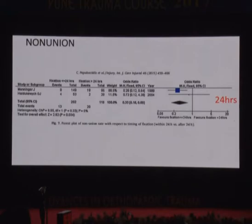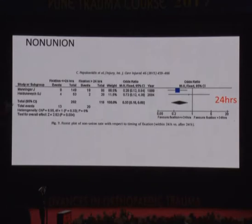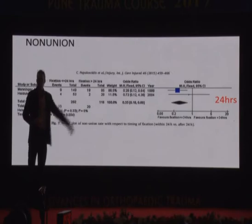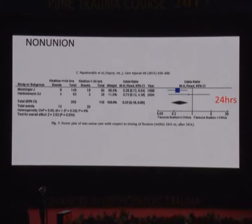What about non-union? It looks like there are two trials — Hadikovic and the manager's study — looking at less than 24 hours or over 24 hours, suggesting that non-union rates may go up if we don't get to them before 24 hours. So AVN may not be affected, but non-union may start to go up significantly if we wait beyond 24 hours. But the best available evidence here is two trials with only about six event rates in each group — so we're establishing practice on very limited data.